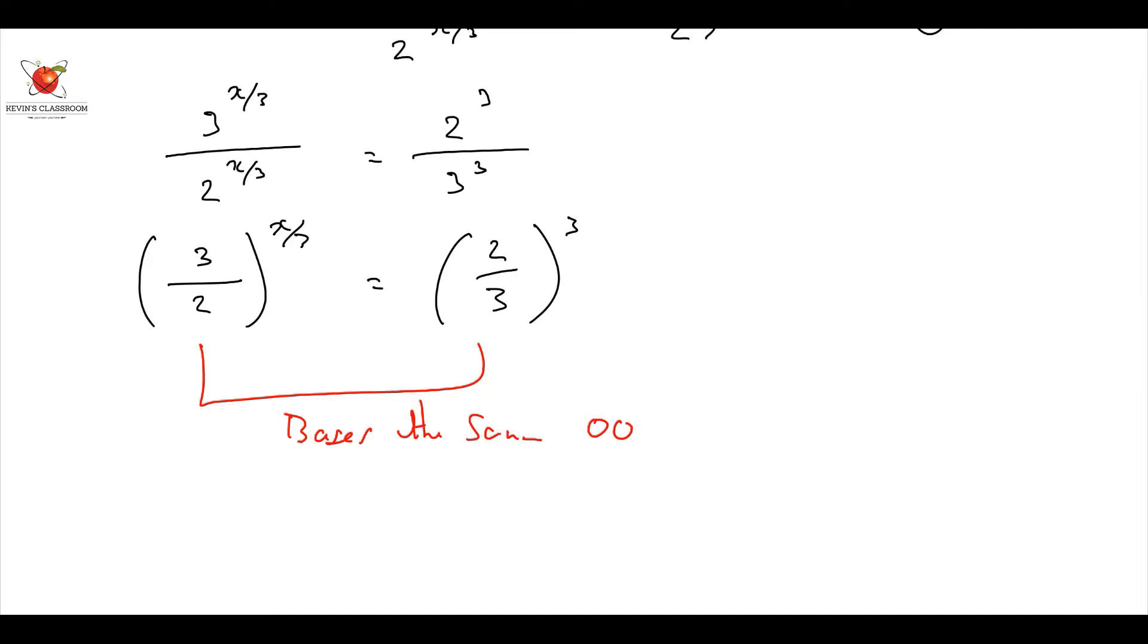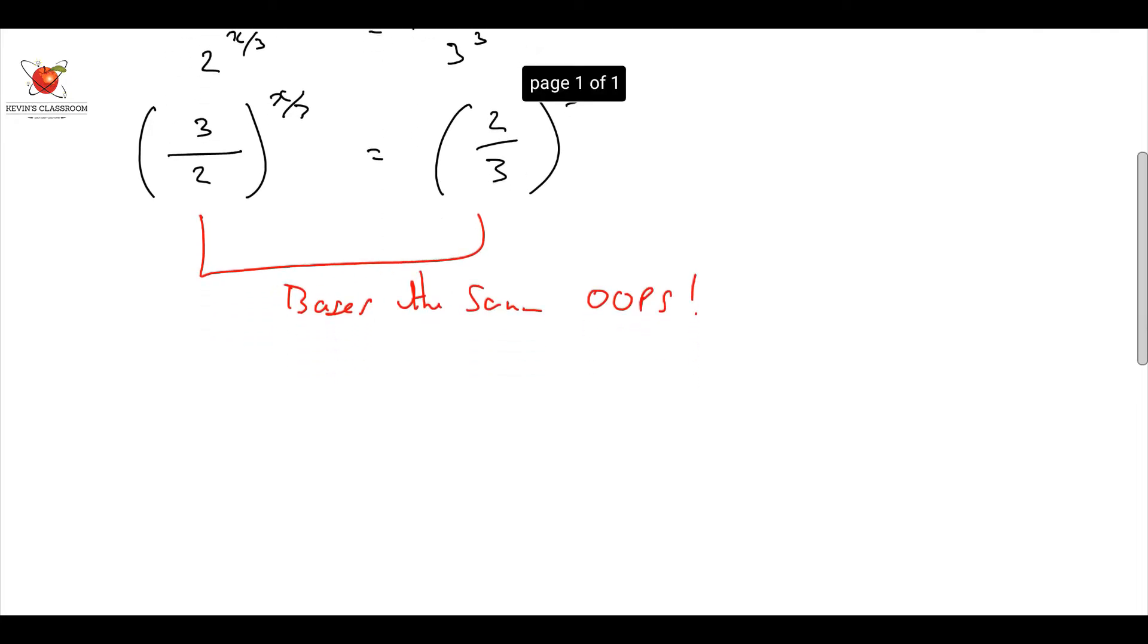But in this case, I can go, oops, they are not the same. Can I make them the same? Yes, I can. I can say that 3 over 2, I'm going to use a trick. I'm going to invert it.